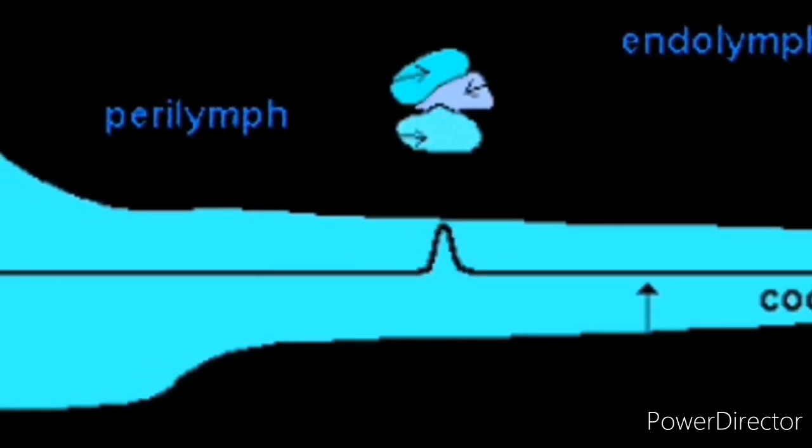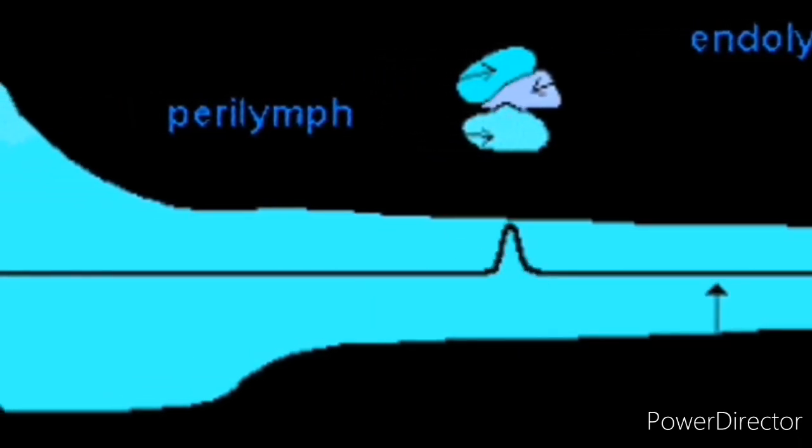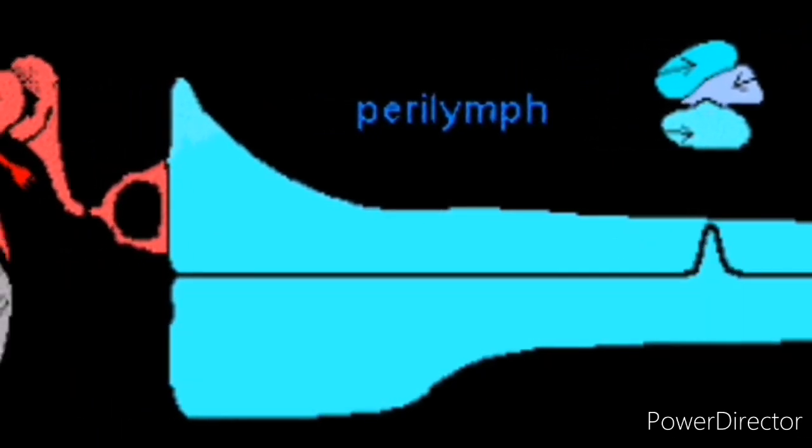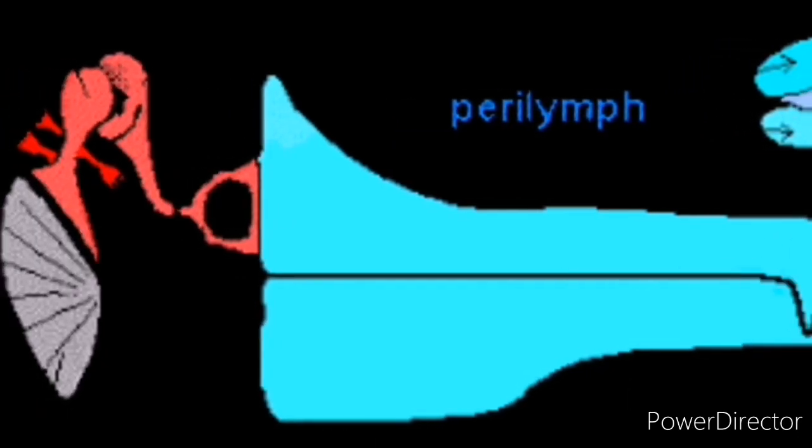In the cochlea, sound waves are transformed into electrical impulses which are sent to the brain. The brain then translates the impulses into sounds that we know and understand.